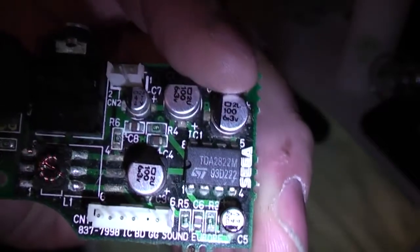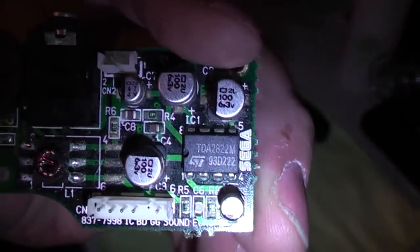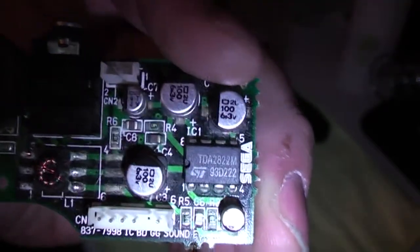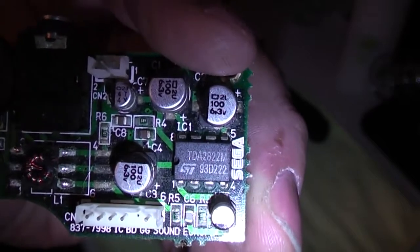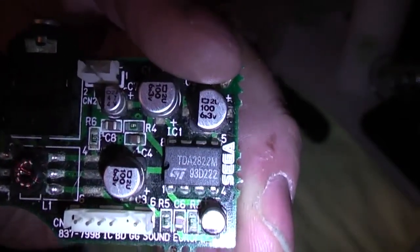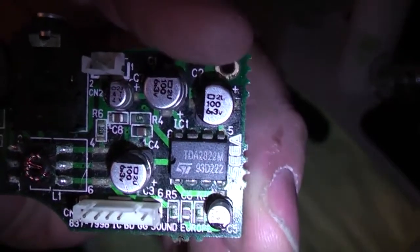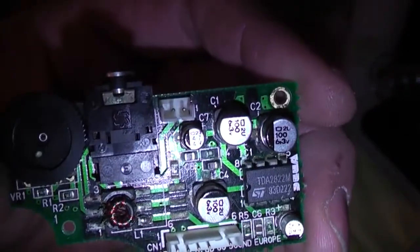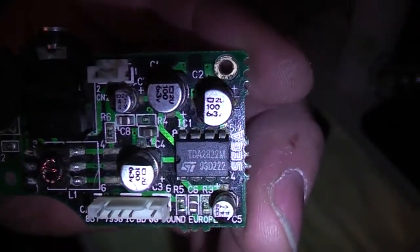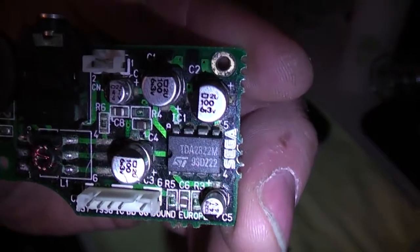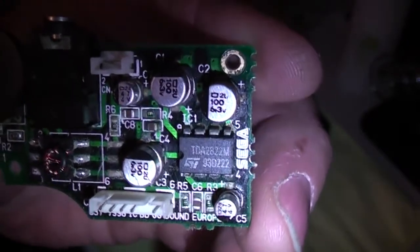But like I said, the microfarad rating does need to be precise. So when you're replacing any capacitor, just look at the ratings on it. And it will say two different ratings, 100 on this one and 6.3 volts. So that's the easiest way to replace any capacitor is to just look at it because they're usually all marked with their ratings.